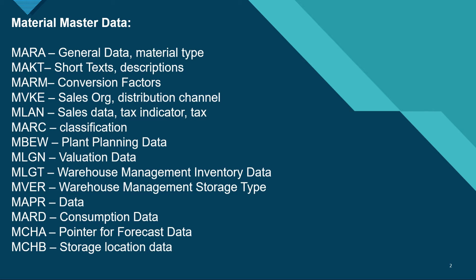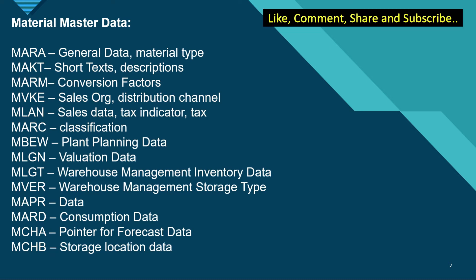The first one is MARA, which has the general data and material type information. MAKT has short texts and descriptions. MARM stores the conversion factors. MVKE has the sales organization and distribution channel information. MLAN has the sales data and the tax indicator.